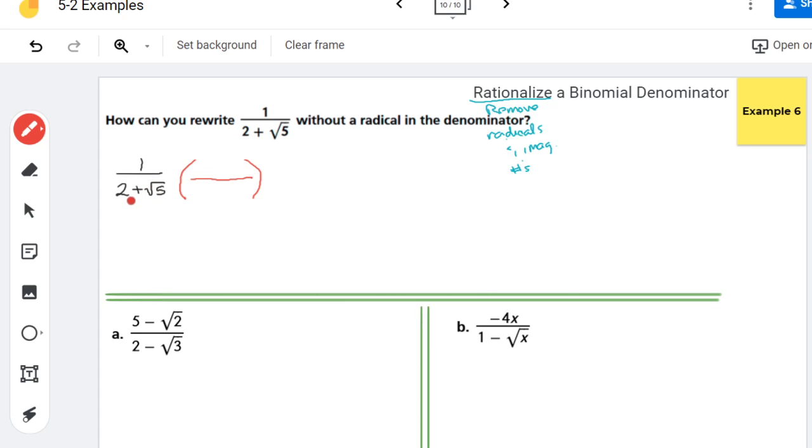And so what I'm actually going to do is put the conjugate of this expression down here. Recall that a conjugate is just the same expression, but where I flip the sign in between them. So instead of having 2 plus root 5, I put 2 minus root 5. And let's see what happens.